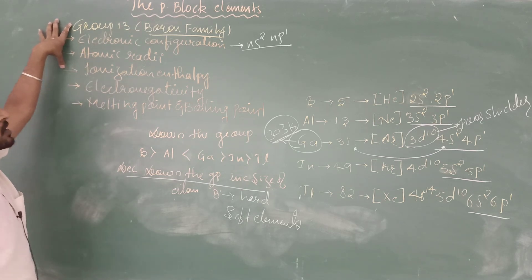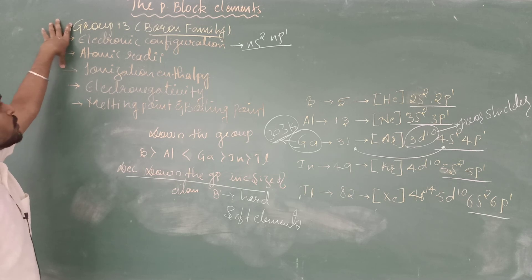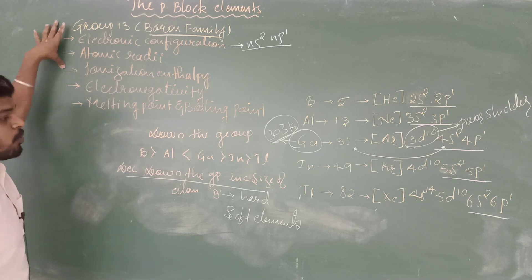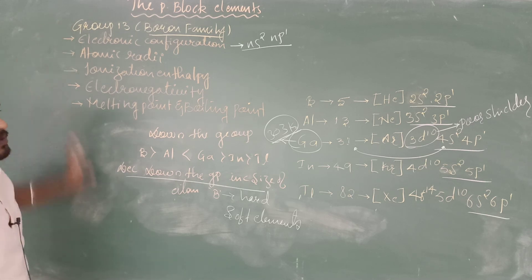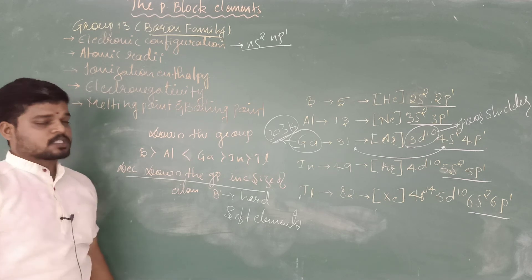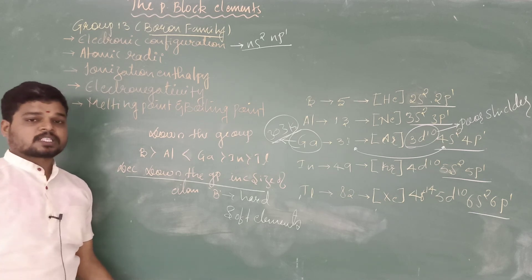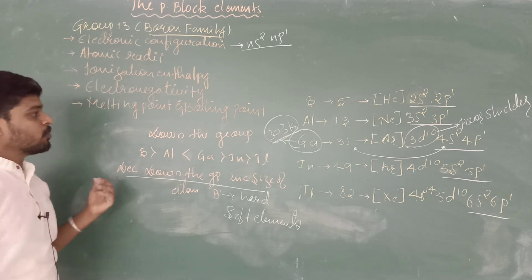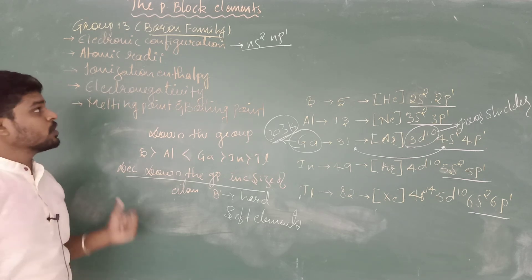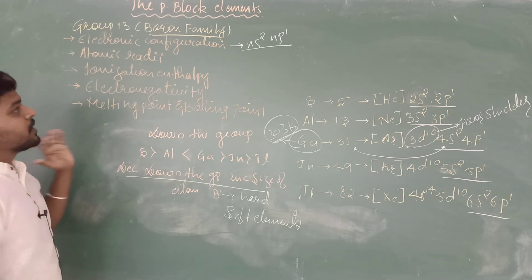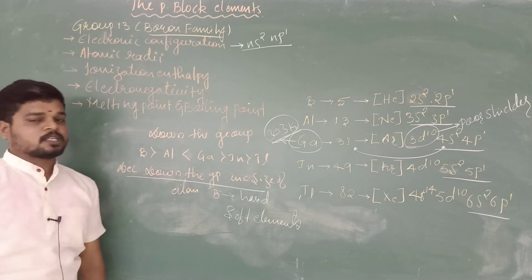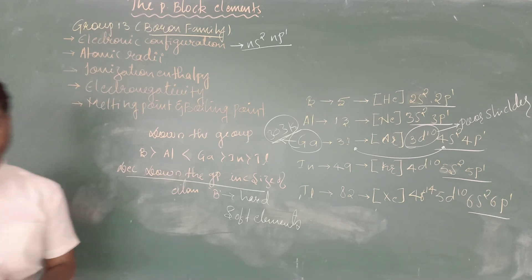These are some of the general characteristics of group number 13, that is your boron family. With this we finish today's session, and in the next lecture we will move on to the chemical properties of group 13 elements.